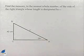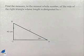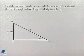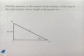Now let's look at a problem dealing with a right triangle. Find the measure to the nearest whole number of the side of the right triangle whose length is designated by C.